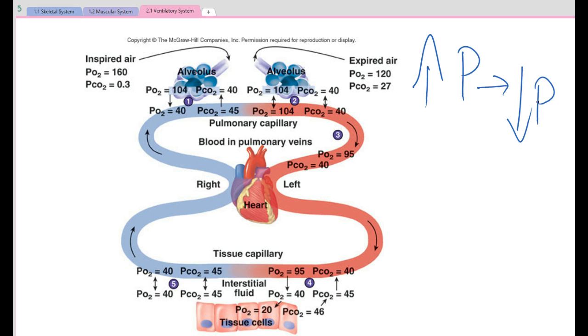So when we breathe in, there is a high pressure in the atmosphere, a low pressure in the lungs, so the air moves into the lungs. And from there, we're interested in the pressure of carbon dioxide versus oxygen. So if we look at where the oxygen is going to move from, it moves from the alveoli into the blood.